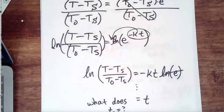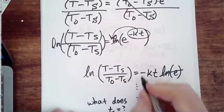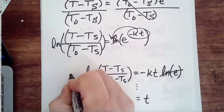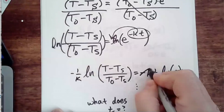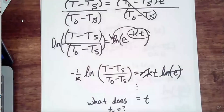There'd be like a coefficient — negative one over K would do the job. I would live real clean doing it that way.